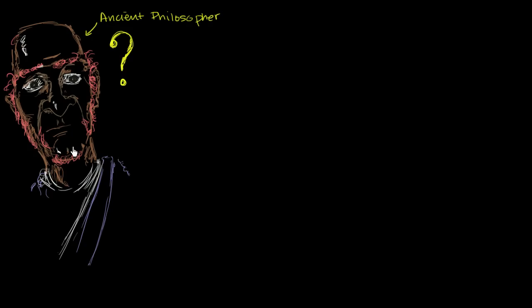Let's say that you are an ancient philosopher who is building up mathematics from the ground up. You already have a reasonable understanding of what a negative number could or should represent, and you know how to add and subtract negative numbers. But now you are faced with a conundrum: what happens when you multiply negative numbers — either a positive times a negative, or two negative numbers?